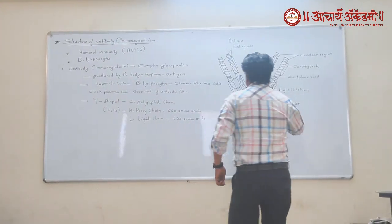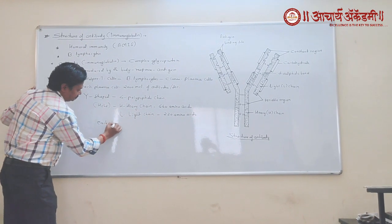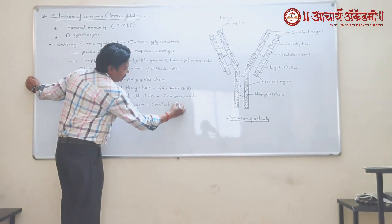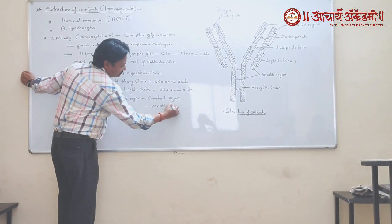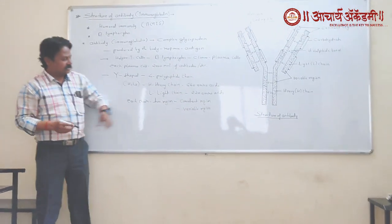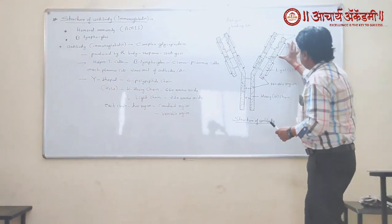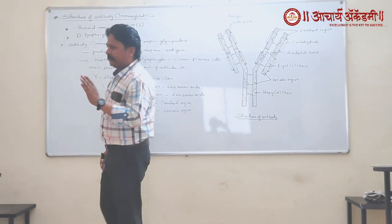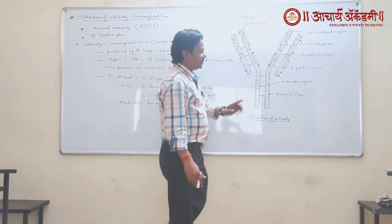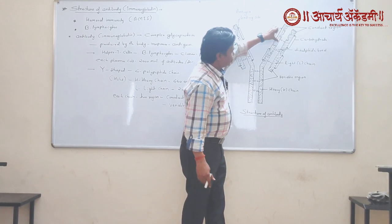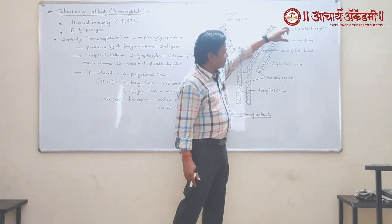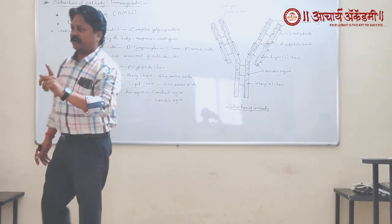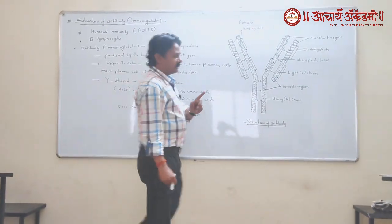Now, each chain consists of two regions. The first is the constant region, and the second is the variable region. The constant region is the region which consists of a similar sequence of amino acids. The variable region is the region which consists of a different sequence of amino acids. So, the region having the same amino acid sequence is the constant region, and the region having a different amino acid sequence is called the variable region.